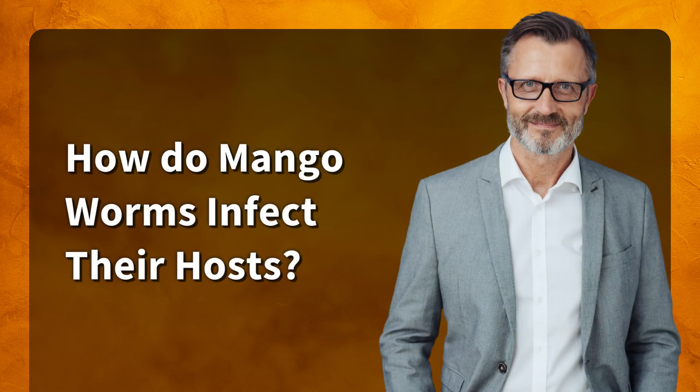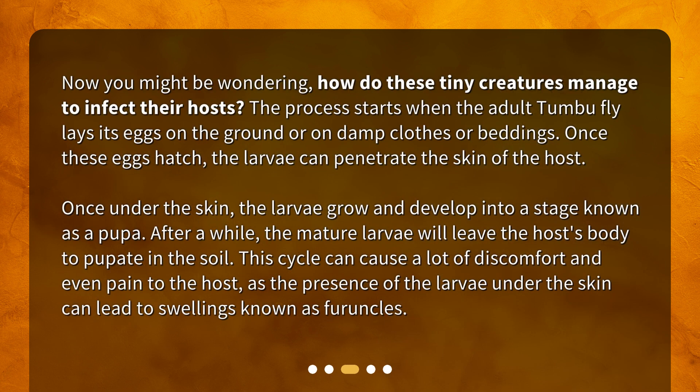How do mango worms infect their hosts? The process starts when the adult tumbu fly lays its eggs on the ground or on damp clothes or beddings. Once these eggs hatch, the larvae can penetrate the skin of the host. Once under the skin, the larvae grow and develop into a stage known as a pupa.